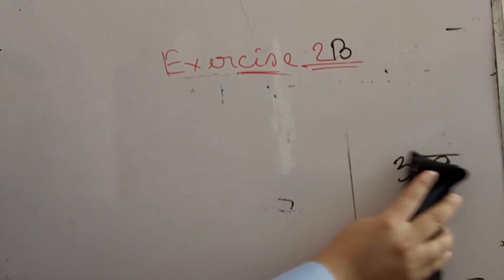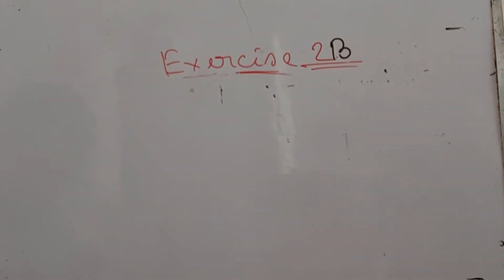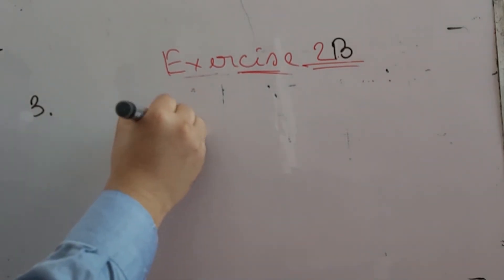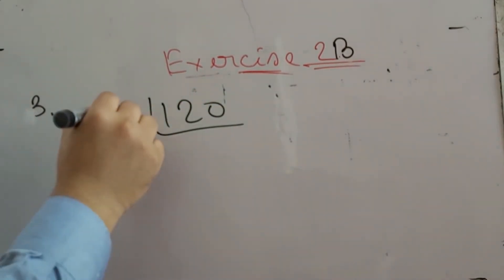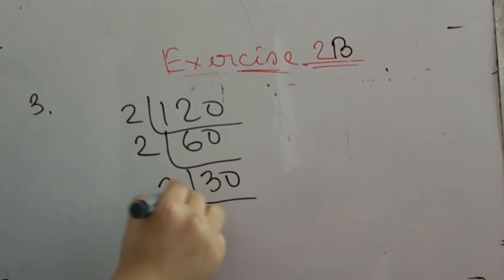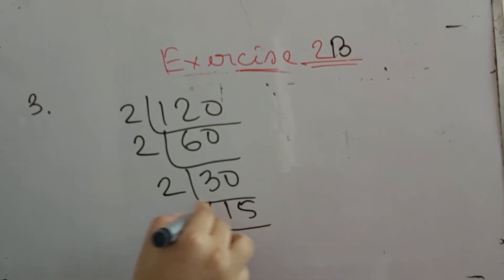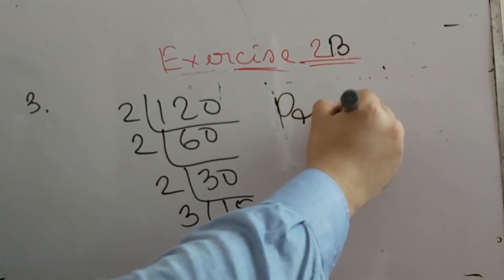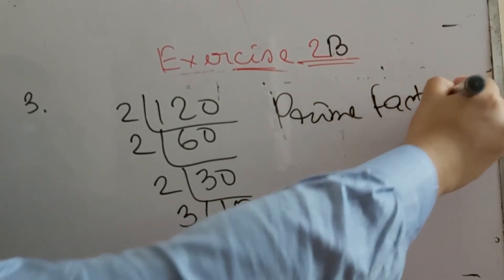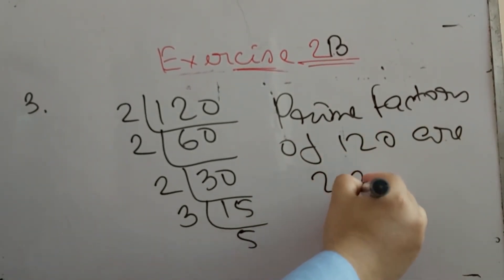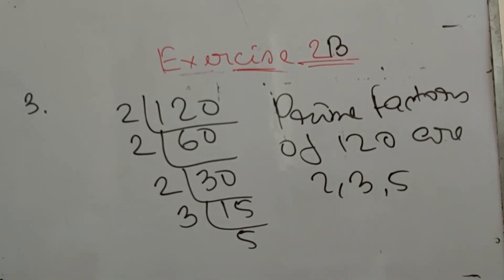Now number 3. Number 3 says: what prime numbers are factors of 120? Similar type of way — we find the prime factors of 120. Divide 120 by 2 to get 60, divide 60 by 2 to get 30, divide 30 by 2 to get 15, divide 15 by 3 to get 5. So the prime factors of 120 are 2, 3 and 5. That is the answer to number 3.